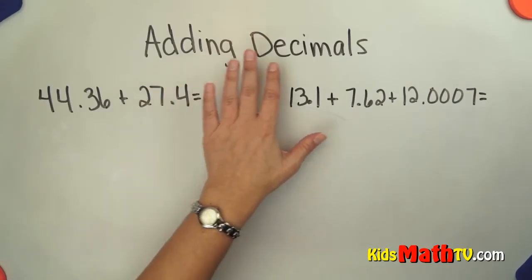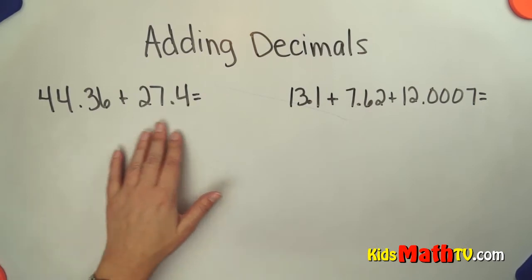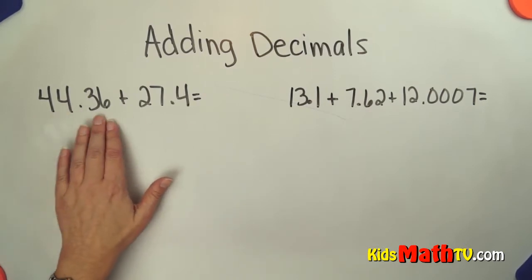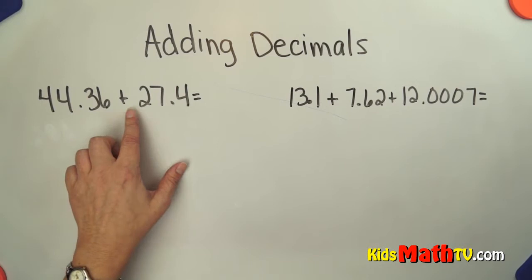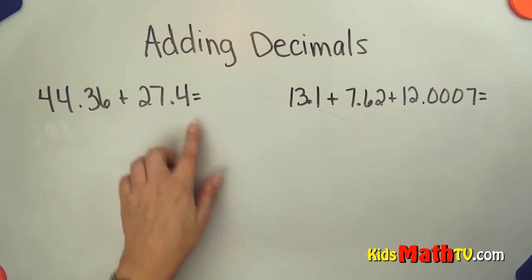In this lesson you will learn about adding decimals. So here we have two decimals to add together, 44 and 36 hundredths added to 27 and 4 tenths.